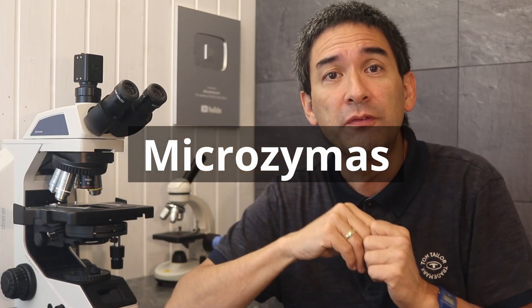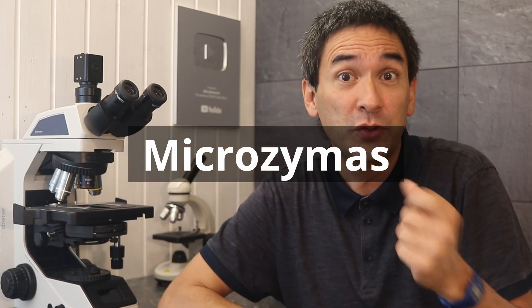The French chemist Antoine Béchamp took pleomorphism a step further. He proposed the existence of microzymes, which he believed were the fundamental units of life. According to this view, these were indestructible granules present in all living things, able to survive even after death. These microzymes could transform into bacteria or fungi depending on the environment. This view is completely wrong—these microzymes do not exist.